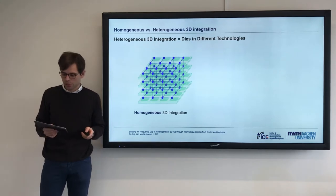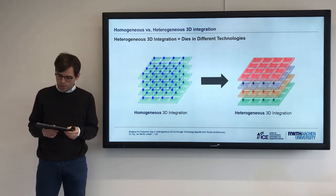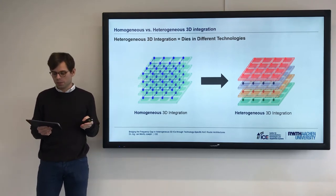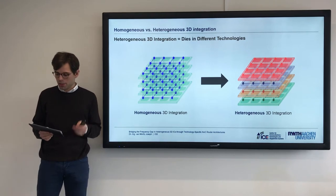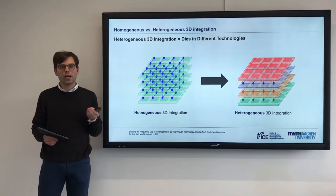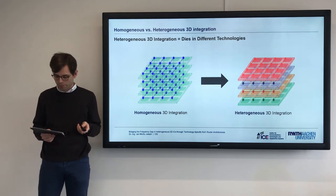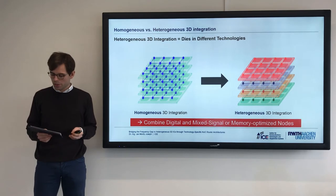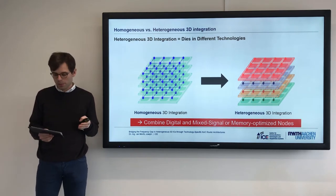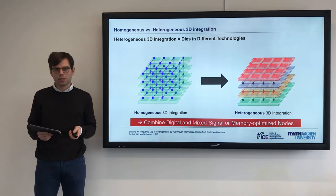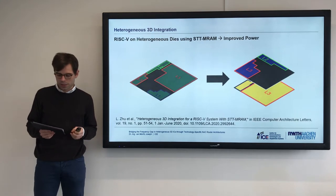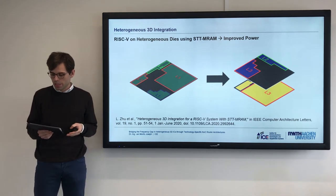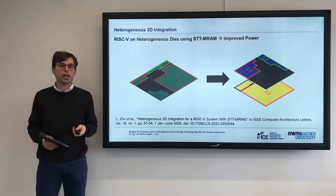Heterogeneous 3D integration is game-changing. In homogeneous 3D integration, the technology of all dice are equivalent. In heterogeneous 3D integration, the technologies of dice are aligned with the requirements of components. This allows combining technology nodes optimized for logic, for mixed signal processing, and for memory in a single IC. For instance, we recently demonstrated the advantages of splitting memory and processing for RISC-V cores between two dice with large power advantages.